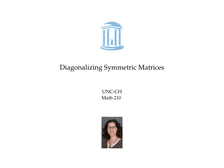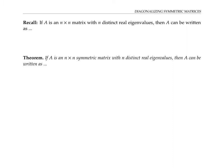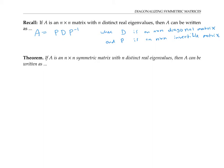This video is about diagonalizing symmetric matrices. In the video about diagonalizing matrices in general, we saw that if we have an n by n matrix A with n distinct real eigenvalues, then A can be written as P times D times P inverse, where D is an n by n diagonal matrix and P is an n by n invertible matrix. We constructed D by stringing together the eigenvalues of A, and P by stringing together eigenvectors for each eigenvalue as column vectors.